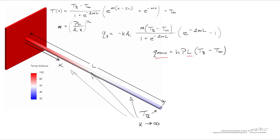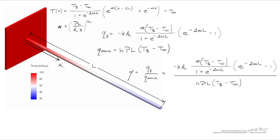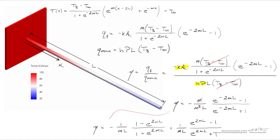Now let's define what engineers call fin efficiency, η, which equals the actual heat withdrawn by the fin divided by the maximum heat that could occur if the material had infinite thermal conductivity. Substituting the expressions for Qf and Qmax, we see that the temperatures fall out of the ratio. Using the definition of the fin parameter m — where k times cross-sectional area divided by h times perimeter equals 1/m² — we can simplify further. After algebraic manipulation, fin efficiency for an adiabatic-tip fin is: η = tanh(mL) / (mL).